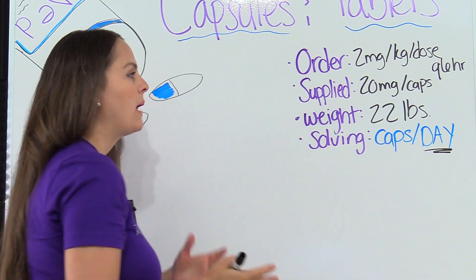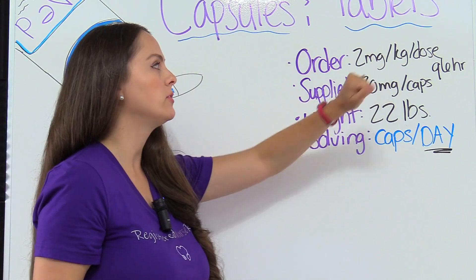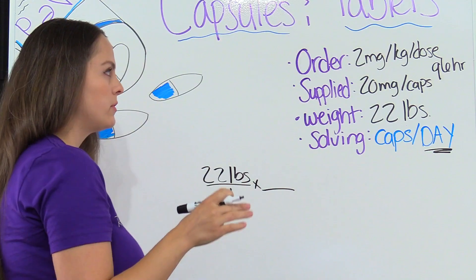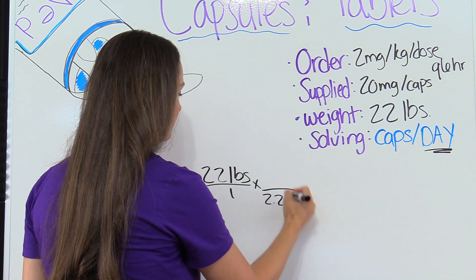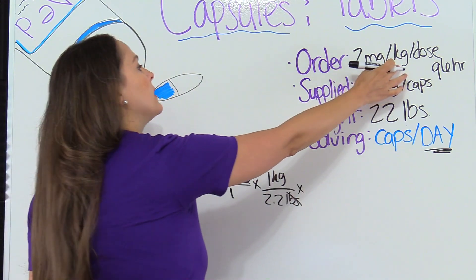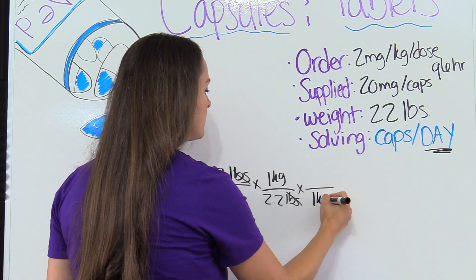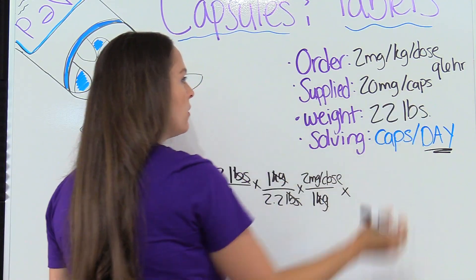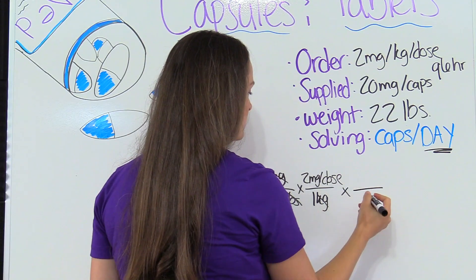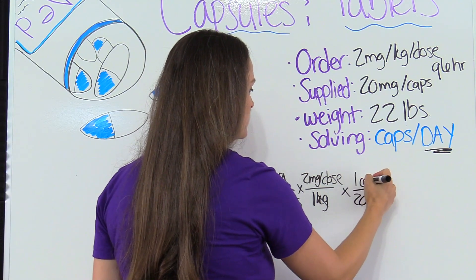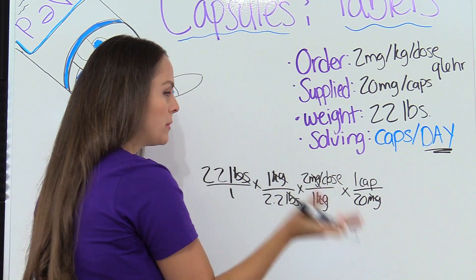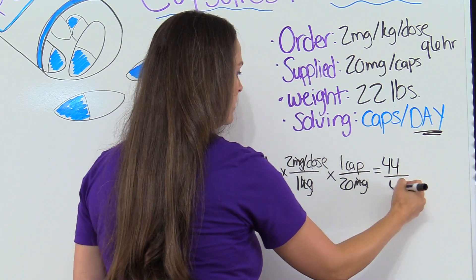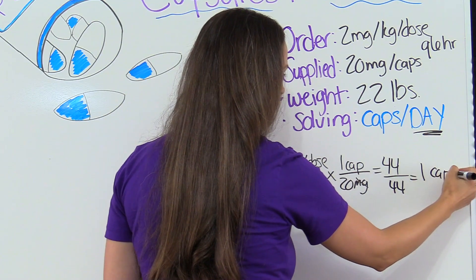We start by plugging in the patient's weight. Since it's in pounds, we have to convert to kilograms because that's how it's ordered. Our patient weighs 22 pounds, and from the metric table we know 2.2 pounds equals one kilogram — pounds cancels out. Now we plug in what was ordered: for every kilogram this patient weighs, we give 2 milligrams per dose. Kilograms cancels out. We're supplied with 20 milligrams per capsule, so milligrams cancels, leaving capsules per dose. Multiply: 44 over 44 — one capsule per dose.